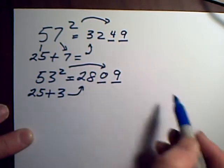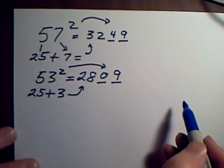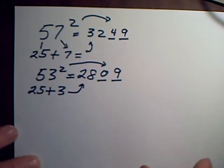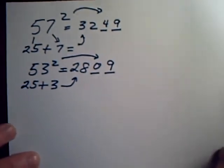And in the two spaces after 28 I'll put in 3 squared which is 9, so I have to put in 09. It actually will work with anything near 50.